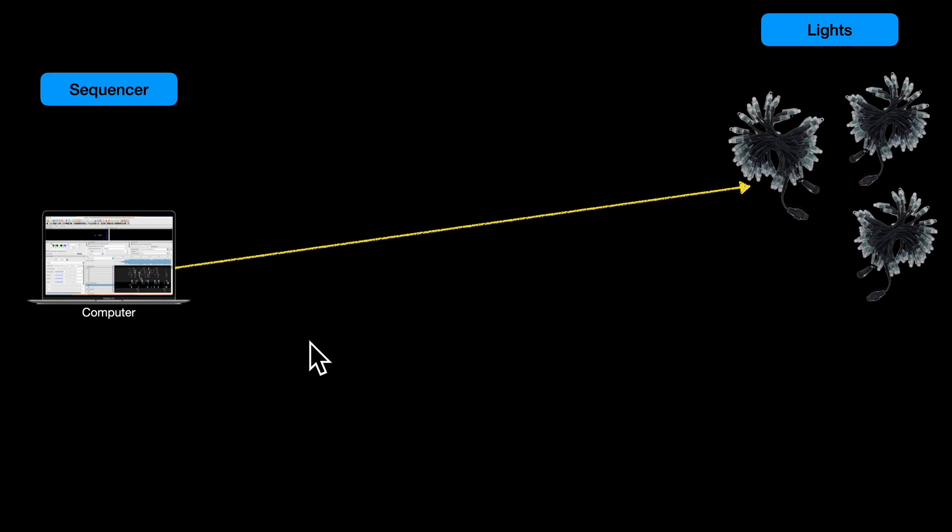For now, imagine that we've got our sequencer, which is a computer. It can be Windows, Mac, or Linux, it doesn't really matter. That sequencer then controls sets of lights that you've got strung up outside, colored lights that are red, green, blue, and can be at various brightnesses. They're known as addressable LEDs.